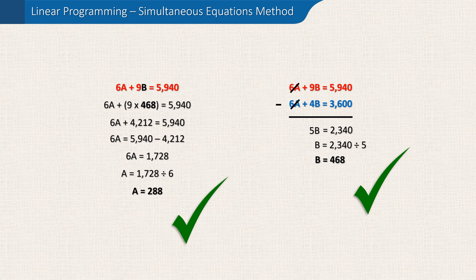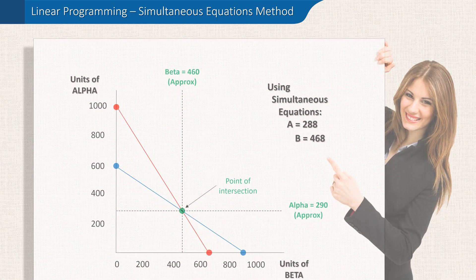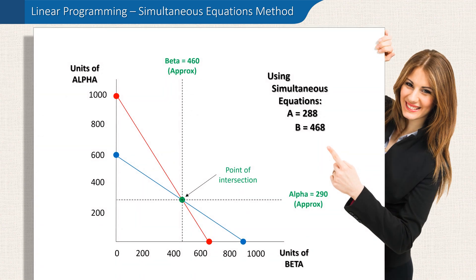So using simultaneous equations we've worked out that the best production mix to maximise contribution using our limited resources is to produce 288 alphas and 468 betas. Compare this with the graphical method used in the previous video, where we worked out that we'd need to produce approximately 290 alphas and 460 betas. The figures are broadly the same, but by using simultaneous equations we get the precise figure.